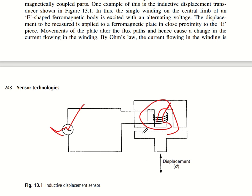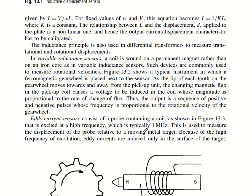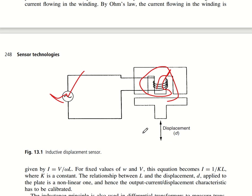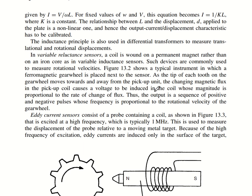Based on Ohm's law, I = V/(ωL), so for fixed values of ω and V, the equation becomes I = 1/(kL), where k is a constant. The relationship between inductance L and displacement d applied to the plate is non-linear, giving a current-versus-displacement characteristic. This same principle is used in transformers and can be applied to measure both translational and rotational displacement.